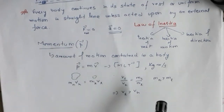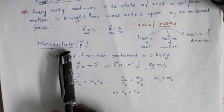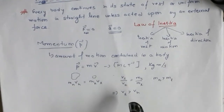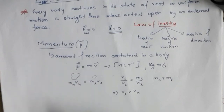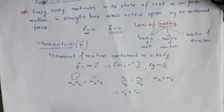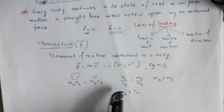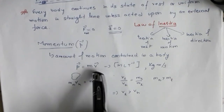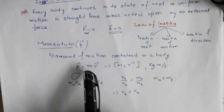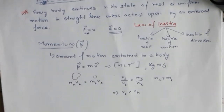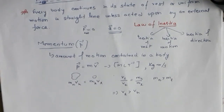We call this linear momentum because in the chapter on rotational motion we will encounter another term called angular momentum. For a body moving with velocity v and mass m, linear momentum is p = mv.